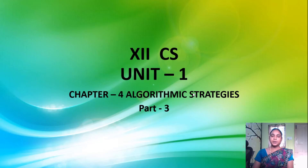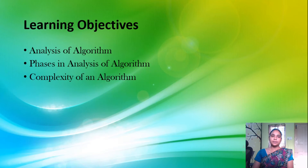Welcome children. In today's session we are going to see 12th standard Computer Science, Unit 1, Chapter 4, Algorithmic Strategies, Part 3. The learning objectives of today's session: we are going to see what is analysis of algorithm, what are the phases involved in analysis of algorithm, and finally, the complexity of an algorithm.